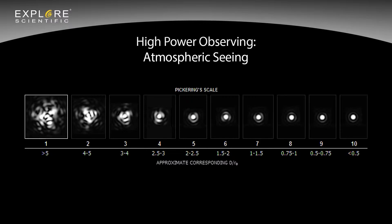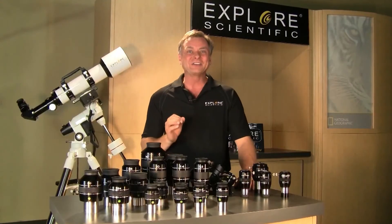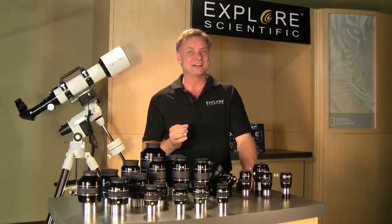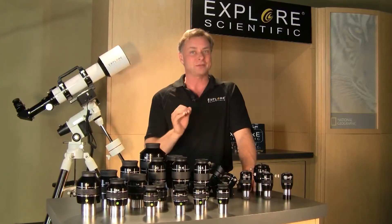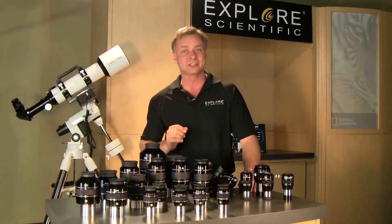The Pickering scale shows one is the worst seeing with five arc seconds or more of star blur at the sharpest focus, and ten is perfect with 0.5 arc seconds or less. Average nights of seeing range from five to seven on the Pickering scale. To determine highest useful magnification on any given telescope, determine the telescope's aperture in millimeters and multiply that number by three. With a 102mm refractor, the result is 306 power.